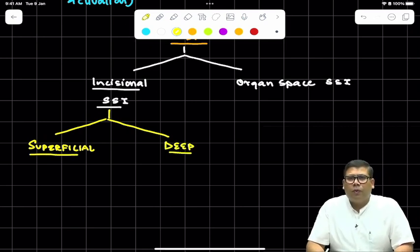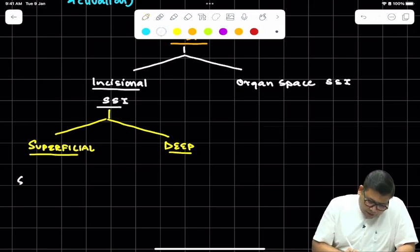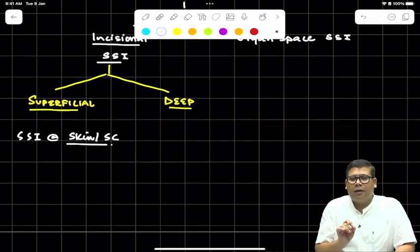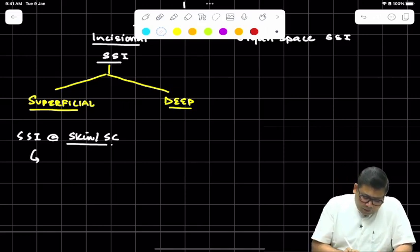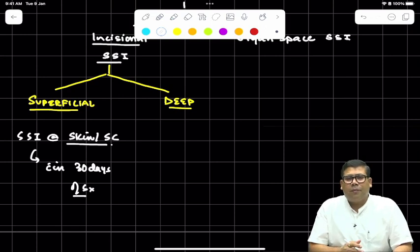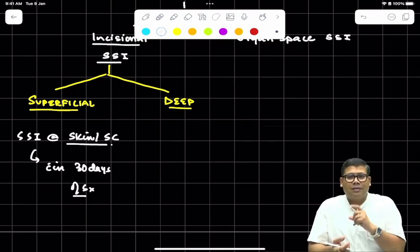When we talk about superficial incisional SSI, this is defined as SSI along the skin and subcutaneous tissue. Now there has to be a time window. Within 30 days of surgery is very important. So if a patient turns to you with pus coming out from the skin after two months, will it be categorized as SSI? No, that will not, except in a certain case.